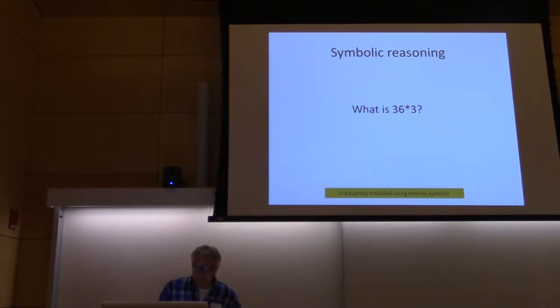It's basically the same thing as we heard when John Laird described system 1 and system 2. Here is an example of symbolic reasoning: what is 36 times 3? That takes a while to figure out. Computer systems that handle reasoning of that kind can be things like rewrite systems, production systems, theorem provers.